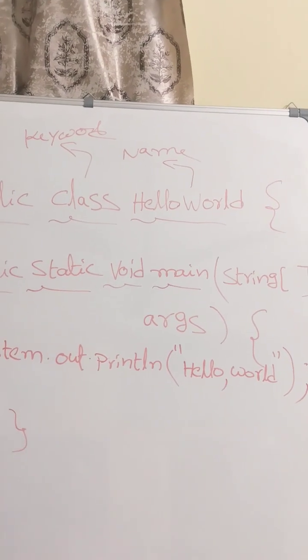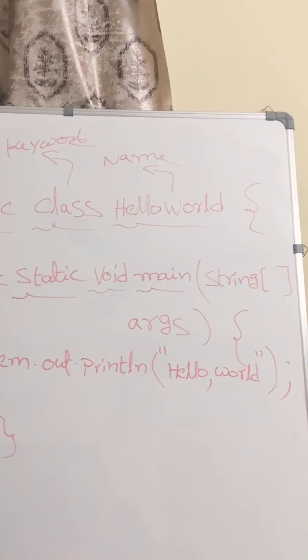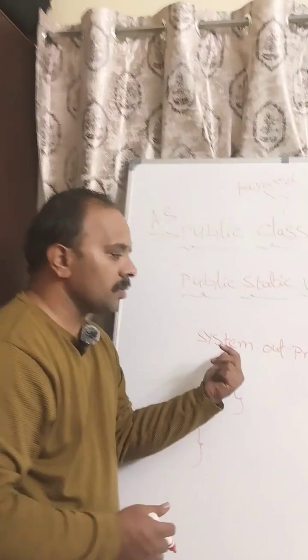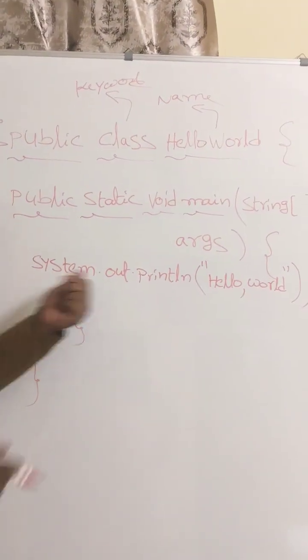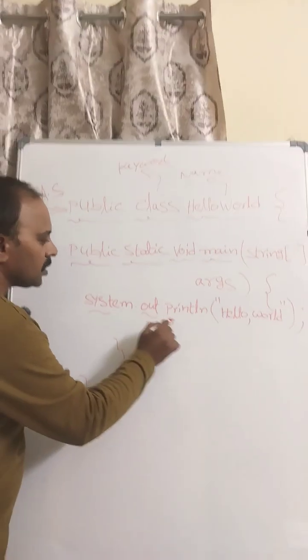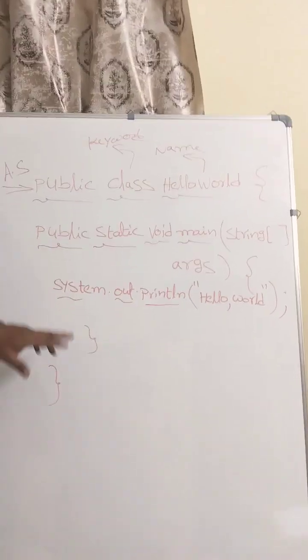And now coming to the third line, we are trying to print Hello World. What is it? System.out.println. That means here we are using a class called System, the member that is 'out' which is belonging to the output string.